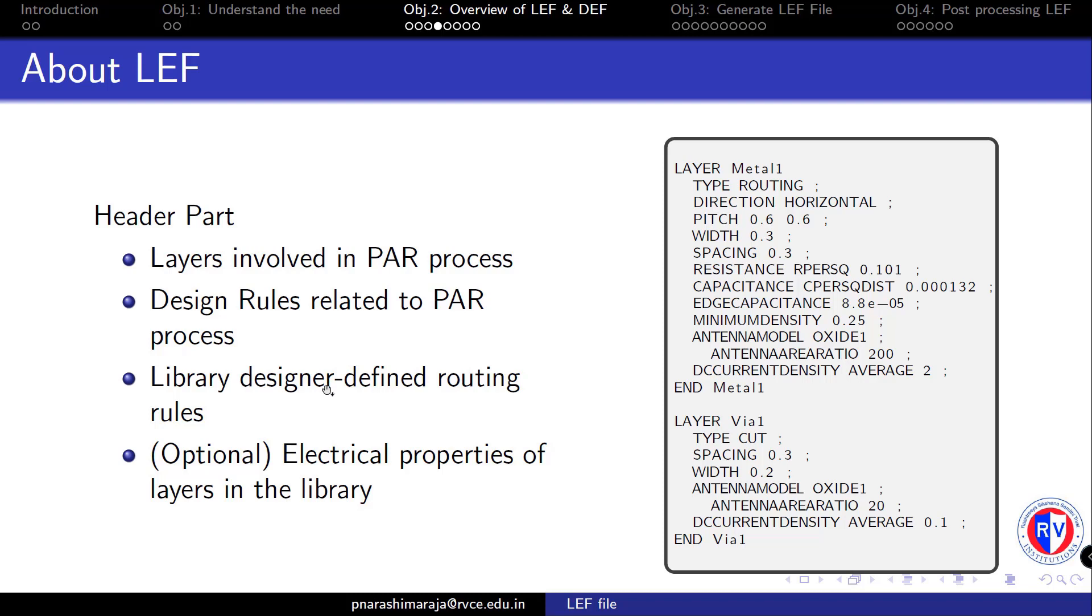It also contains library designer defined routing rules such as the value of the routing pitch and the preferred direction of the metal tracks and other geometric information of wires that are used. Optionally it also contains some of the electrical properties of the layers in the library, such as the maximum current, the unit square resistance of the metal layers that are used.